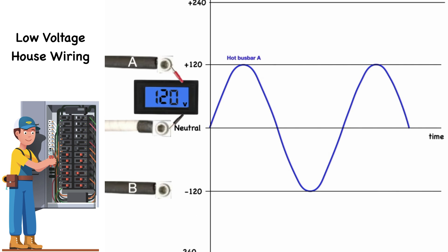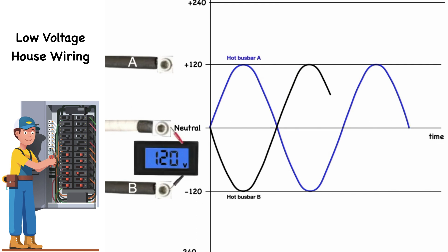Let's repeat the measurement, this time of the hot terminal B with respect to the neutral. As you see, it goes to a maximum of minus 120 volts and back to 0 and repeats itself. It also will do this 60 times a second. Quite evident is the fact that the voltages are out of phase with each other. In fact, they are 180 degrees out of phase with each other.